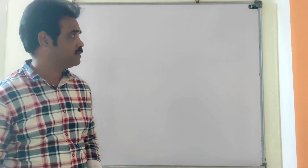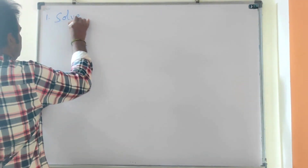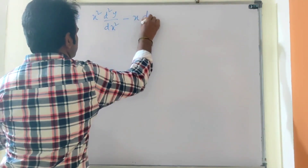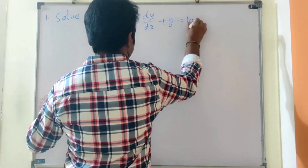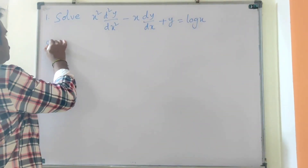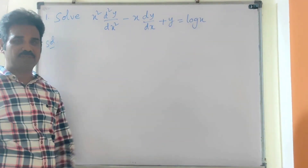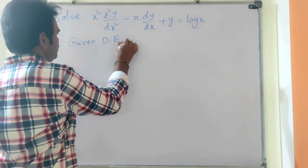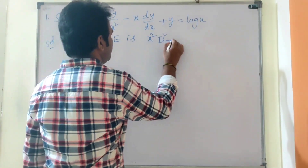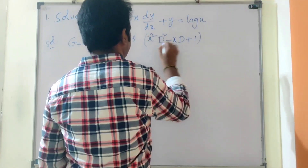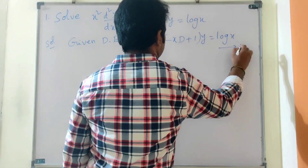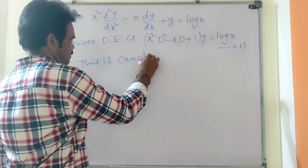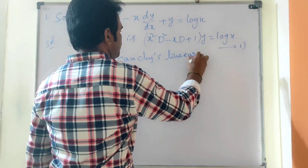We will now do problems on Cauchy's Linear Equation. First problem: Solve x²D²y − xDy + y = log x. This is a Cauchy's Linear Differential Equation. In operator form, the given equation is: (x²D² − xD + 1)y = log x.